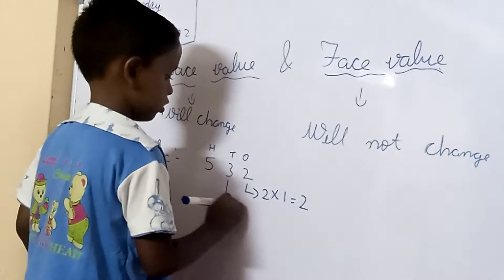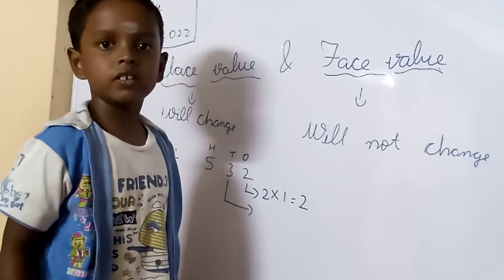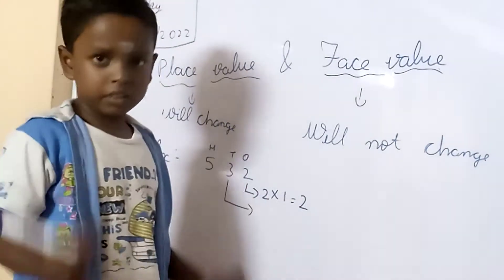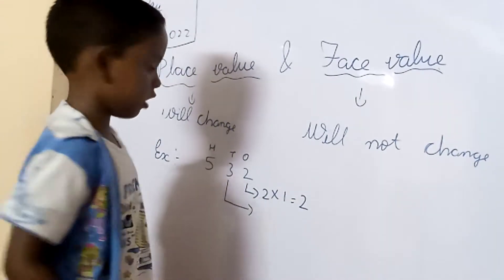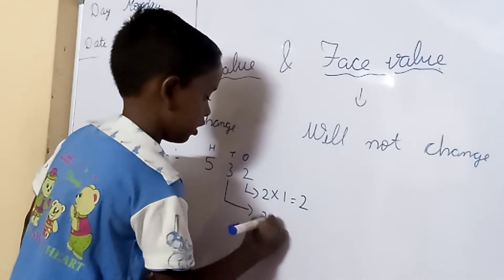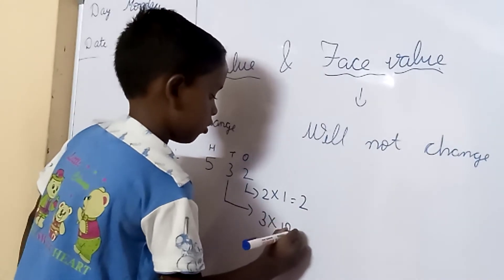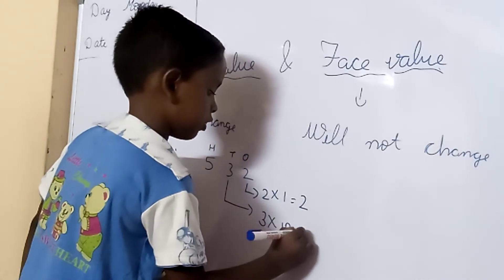Now, 3. 3 is in which place? The 10th place. We should multiply 3 with 10. 3 into 10 is equal to 30.